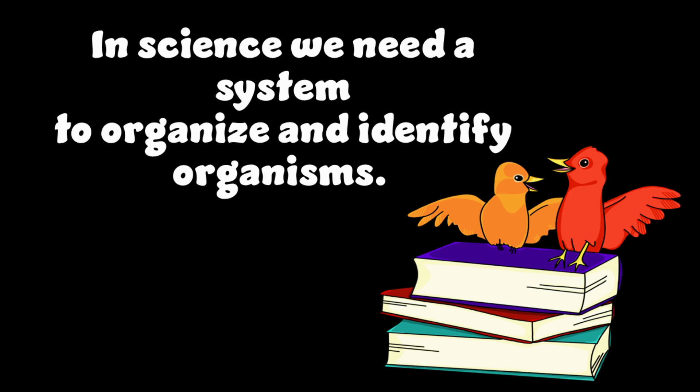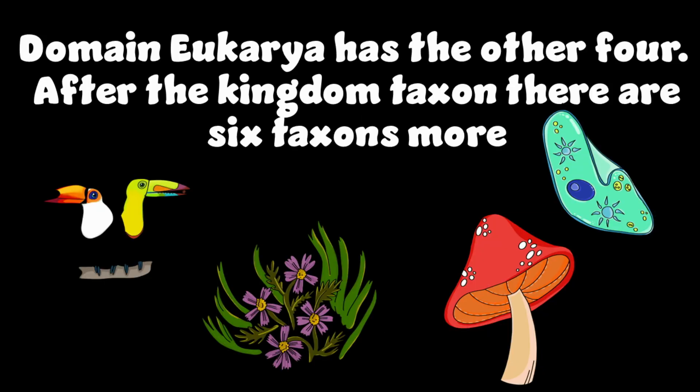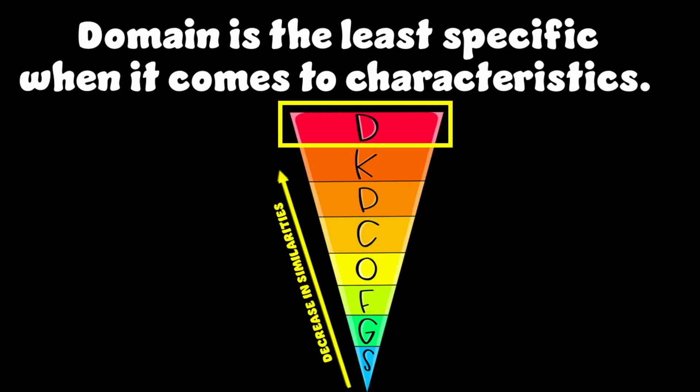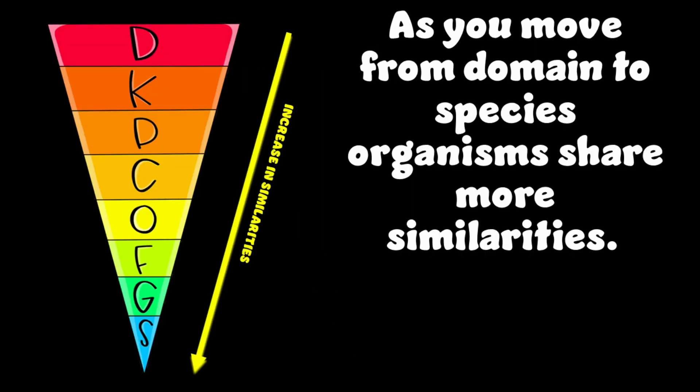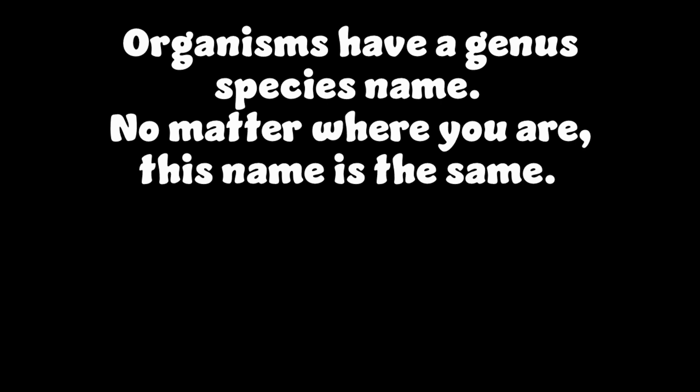Organize and identify organisms! Domain Eukarya has the other four kingdoms. After kingdom, there are six more taxons. Domain is the least specific when it comes to characteristics. As you move from domain to species, organisms share more similarities. Organisms have a genus and species name no matter where you are — this name is the same.